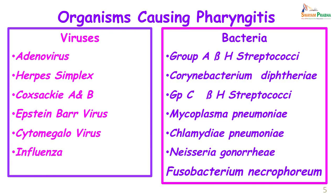When you look at the organisms causing pharyngitis, viruses are responsible for 95 percent of cases. In the remaining cases we have group A beta-hemolytic streptococci, Corynebacterium diphtheriae, group C beta-hemolytic streptococci, Mycoplasma pneumoniae, Chlamydia pneumoniae, and Neisseria gonorrhoeae. Fusobacterium necrophorum is one anaerobic organism which can also cause a devastating pharyngitis.